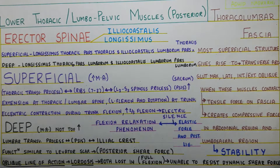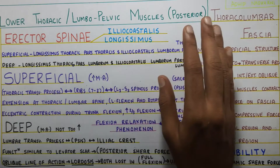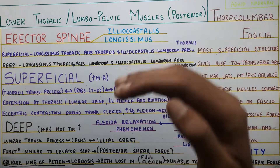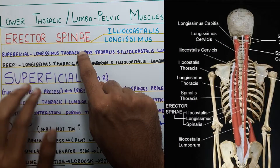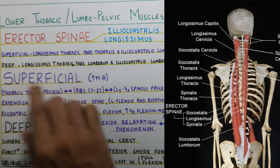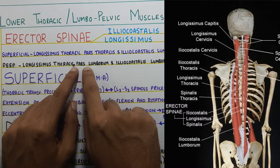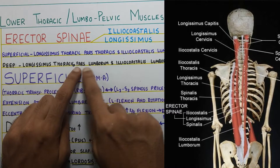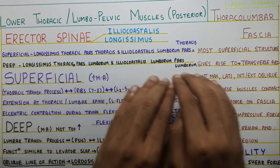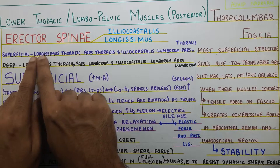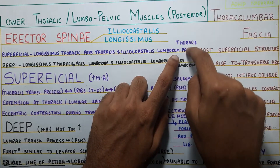Now going ahead to the erector spinae — this is where things get a little tricky. The erector spinae is made up of two muscles: the iliocostalis and longissimus. Looking at it layer-wise, it is a mixture of both. The superficial muscle has longissimus thoracis, and the deep layer also has longissimus thoracis — but the part in the lumbar region is called longissimus thoracis pars lumborum. Similarly, iliocostalis lumborum pars lumborum makes up the deep layer. The superficial layer has longissimus thoracis pars thoracis and iliocostalis lumborum pars thoracis — meaning that part is in the thorax.